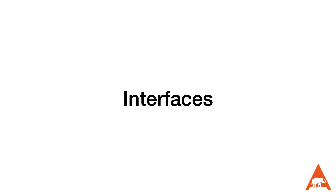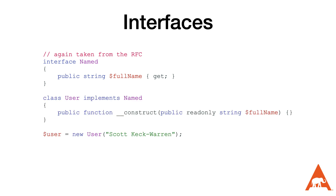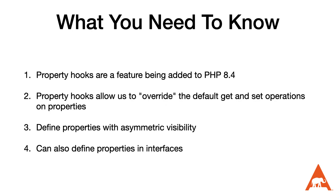Another piece of functionality we're getting with property hooks is the ability to define property hooks inside of our interfaces, so our classes are forced to implement them. The piece of this that's really powerful is that we can define the property inside our interface as read-only by including get after it, or read and write using get and set, and then we can use constructor property promotion to define the property.